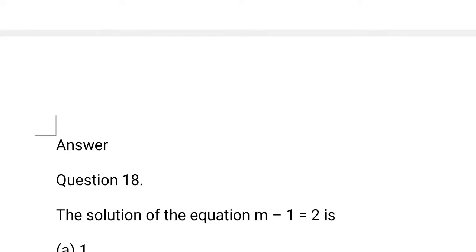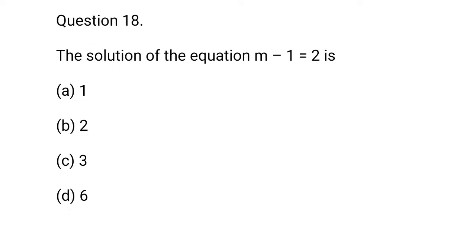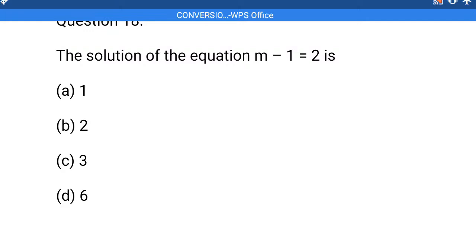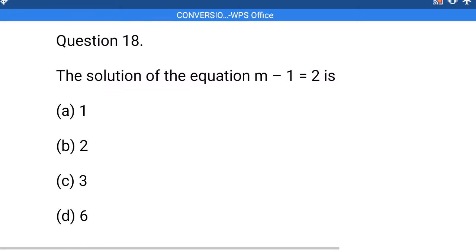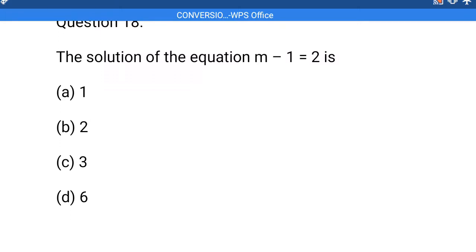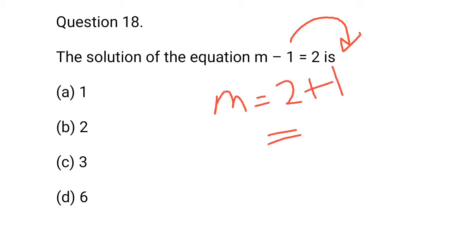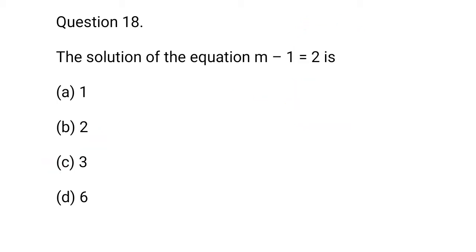Question 18: The solution of the equation m minus 1 is equal to 2. So, m minus 1 is equal to 2. m will be equal to 2 plus 1, that is equal to 3. c option is correct.